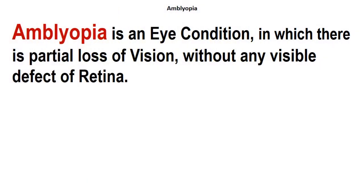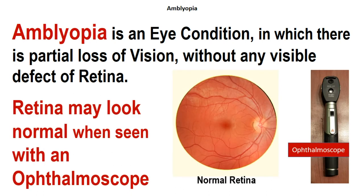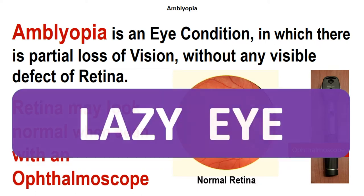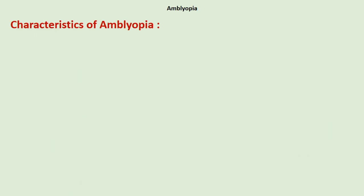The subject for this video is amblyopia: causes and treatment. Amblyopia is an eye condition in which there is partial loss of vision without any visible defect of the retina. Whenever there is some amount of loss of vision, there is definitely some organic cause, or the retina on the back side of the eye may show changes visible with an ophthalmoscope. But in amblyopia, there is no such defect seen — the retina may look normal when examined with an ophthalmoscope.